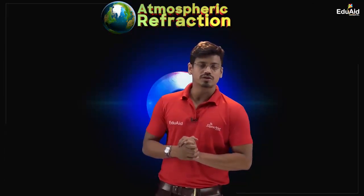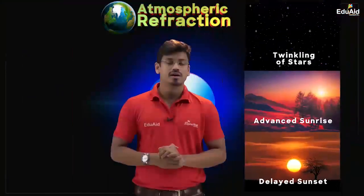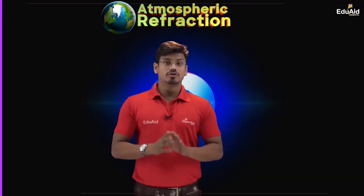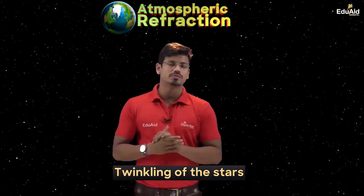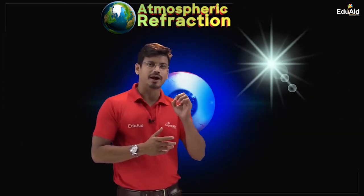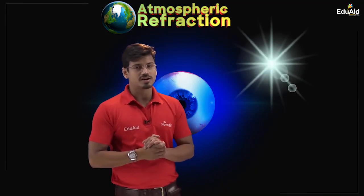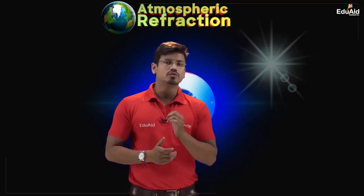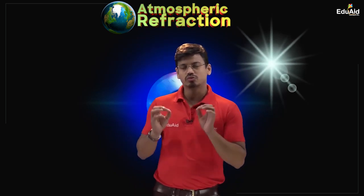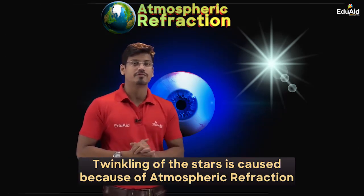There are different events associated with atmospheric refraction. The first event is the twinkling of the stars, and the second is the advanced sunrise and the delayed sunset. Let us study each individually. When you look at stars on a clear night sky, you observe that stars appear bright for some time and then dim, and this keeps repeating. This process is called the twinkling of the stars, and it is caused because of atmospheric refraction of starlight.